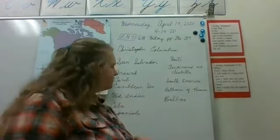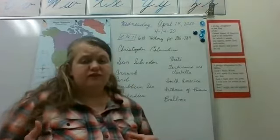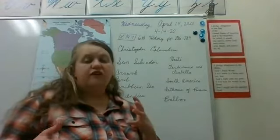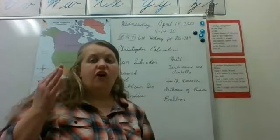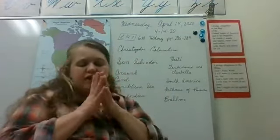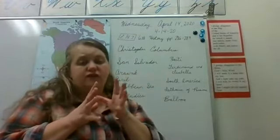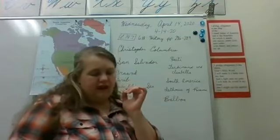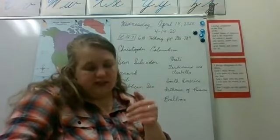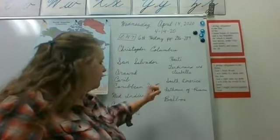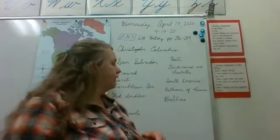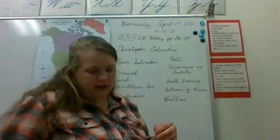On his third voyage in 1498, he went further south. He got caught in the doldrums — a place where wind varies so drastically it can be completely calm then suddenly wild. He got stuck there for eight days near the equator with intense heat. Finally they were carried to South America, where he discovered the Orinoco River and named it.